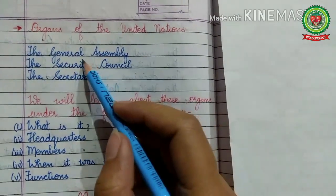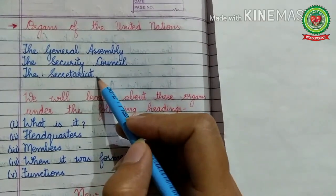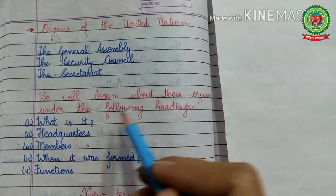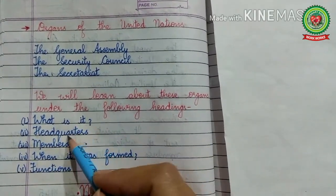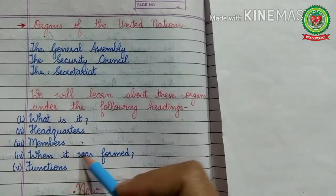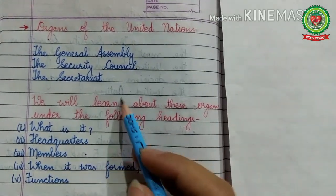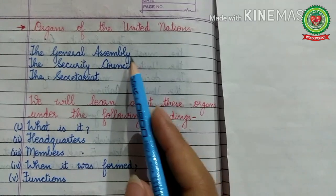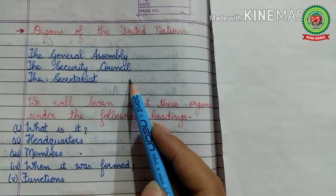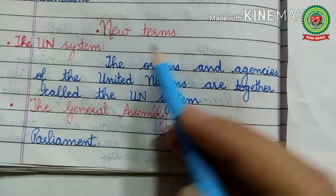In today's video we will learn about the first three organs of the United Nations — that means we are going to learn about the General Assembly, the Security Council, and the Secretariat. We will learn about these organs under the following headings: what is it, headquarters, members, when it was formed, and the functions.